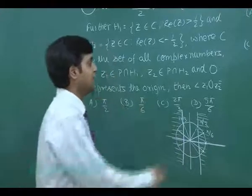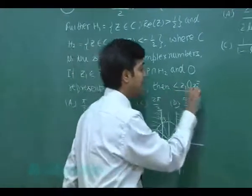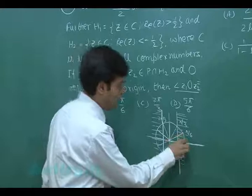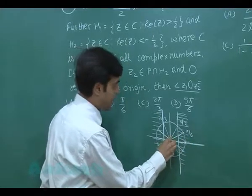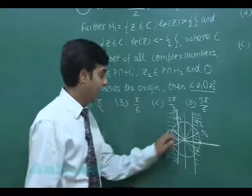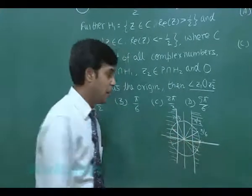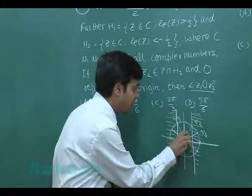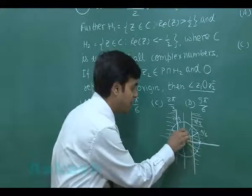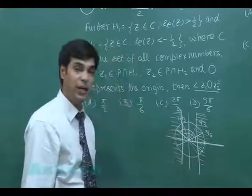Similarly, for z2 we are taking points on these sides. The question asks for angle z1-O-z2. Let's say I have taken z1 here, O is this one, and z2 is like this. The angle I can observe is 150 degrees, because this is 30, this is 30, this is 120 degrees, this is 150 degrees.